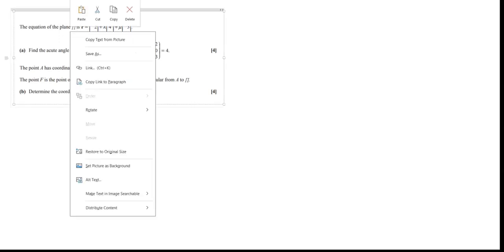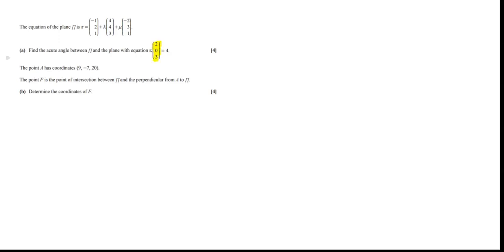Question 4 was a vectors question. We're given the equation of a plane, and it says find the acute angle between that plane and a different plane. Whenever we want to find the angle between two planes, we're going to need the normal vectors. We have the normal vector for the second plane — that's (2, 0, 3).